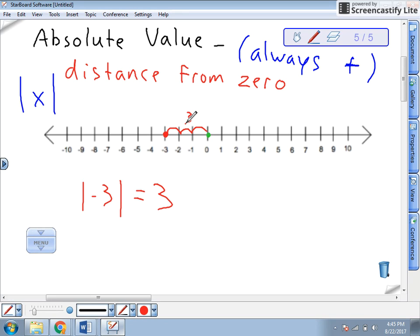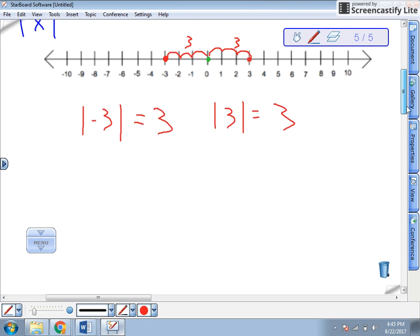The same is true for, let's put a point at three. The absolute value of three, well, that's still three units away, so it's also three. So there's a quick little reminder of what absolute value is. That's why it's always positive. Let's take a look at how we're going to use it to solve our expressions.